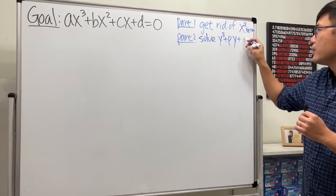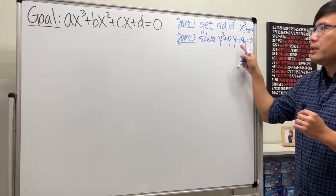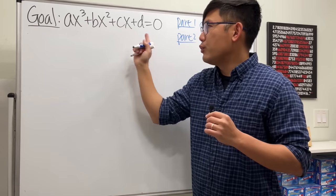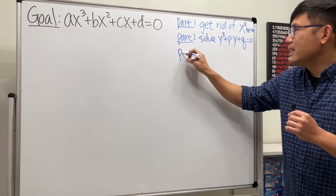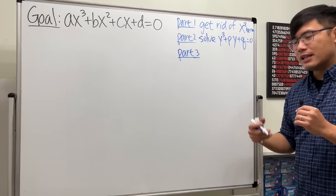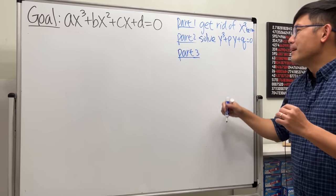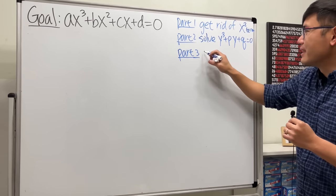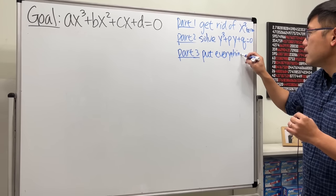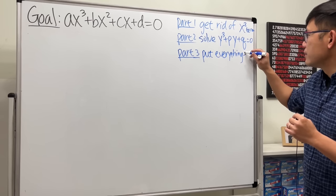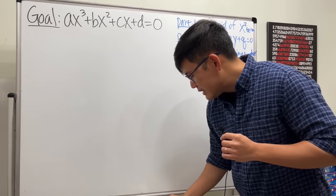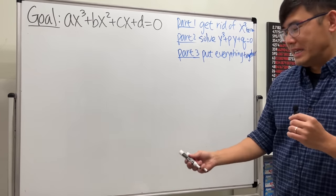Part two: once we get rid of that, we'll be solving with only the third power and first power — in the y-world — so we'll have y³ + py + q = 0 and use the pq formula. Note: I'm not going to divide everybody by a right away — you'll see why. Part three: put everything together.